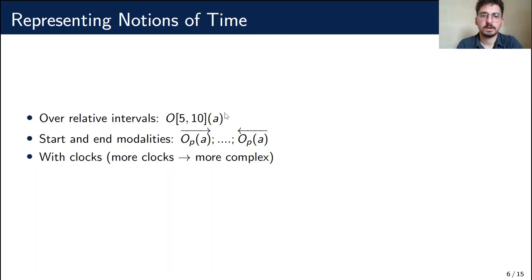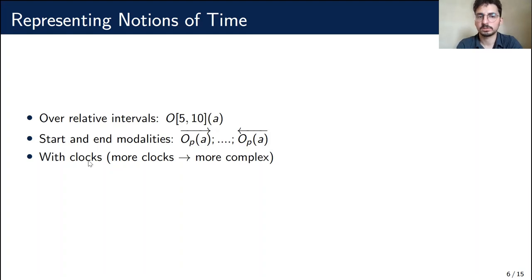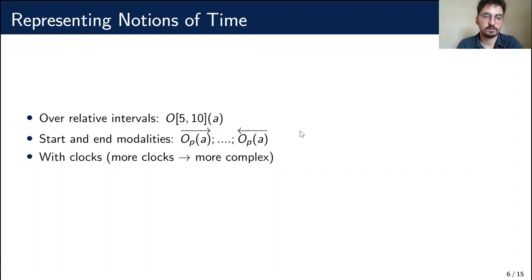We identify three ways that time can be added. First, using relative intervals: if this obligation starts to hold, A must be performed after the next five steps but before ten time steps. Second, by having start-of-norm and end-of-norm modalities, so that A must be performed sometime before a certain point. Third, by adding clocks and referencing them as guards for obligations. Adding clocks adds more complexity, while the other approaches can avoid that. Here we'll focus on relative intervals for simplicity.